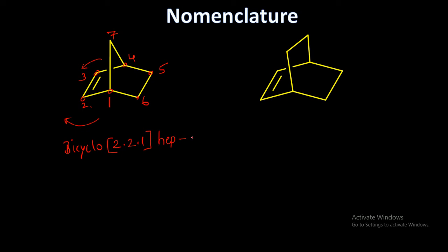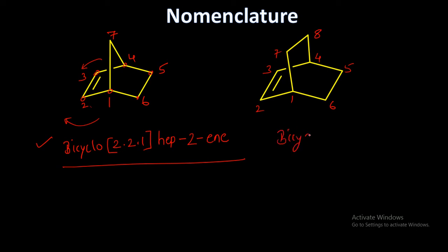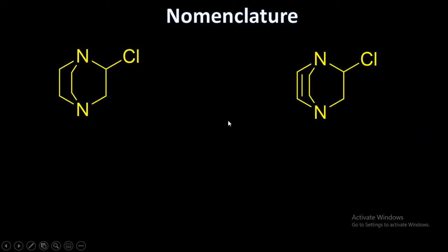In the bracket we have two and one on each side, then one bridge atom, and we need to indicate the double bond. Total atoms are seven. The double bond is at position two, so we write bicyclo[2.2.1]hept-2-ene. Similarly for the next structure: one, two, three, four, five, six, seven, eight — bicyclo[2.2.2]oct-2-ene.